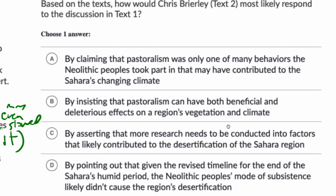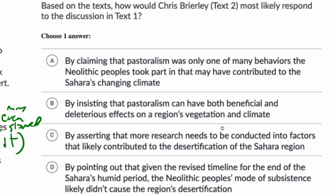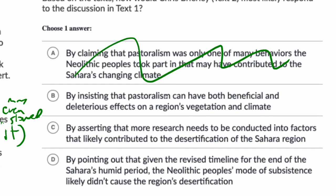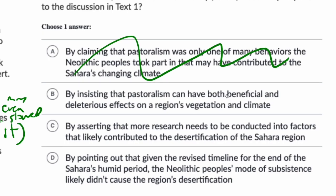Now let's look at the answer choices. Answer choice A: 'by claiming that pastoralism was only one of many behaviors the neolithic peoples took part in.' No — because the author of the second passage wants to say they're not as guilty as the first passage makes them out to be. That's not what Text 2 is arguing.